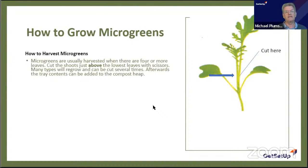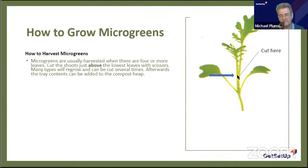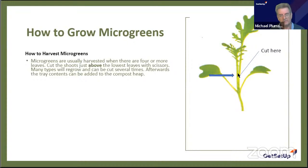If you want more than one harvest, cut with very sharp scissors or a knife — you don't want to squash them. Cut above the bottom two leaves. Usually a sprout brings out two leaves before any others, then the stalk grows and other leaves come out on top.